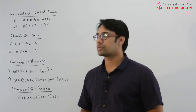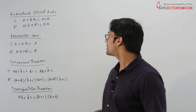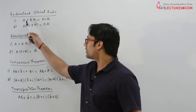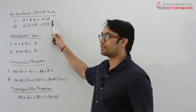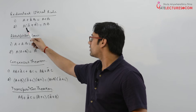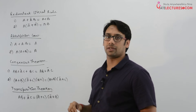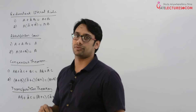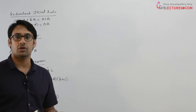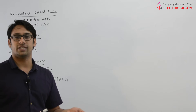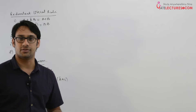Now let us look at the following theorems. The first one is the redundant literal rule. It says if we have A plus A complement B, it can be written as A plus B. And if we have A dot A complement plus B, it can be written as AB. There are two ways of proving this: either we can use a Venn diagram, switching algebra expressions, or a truth table.